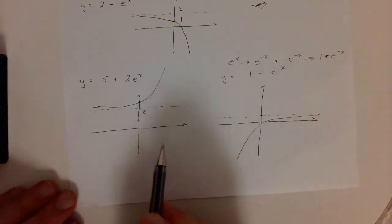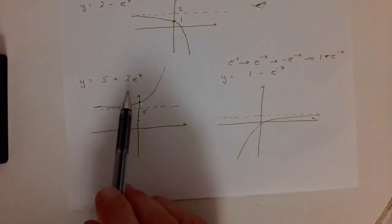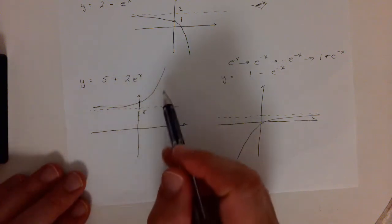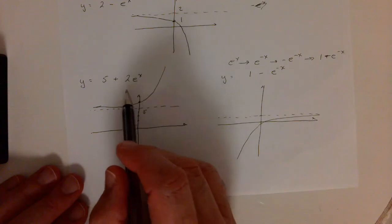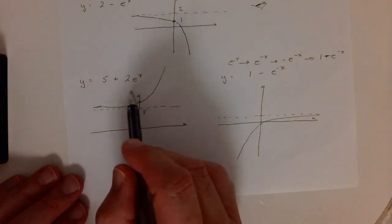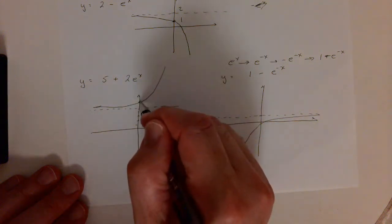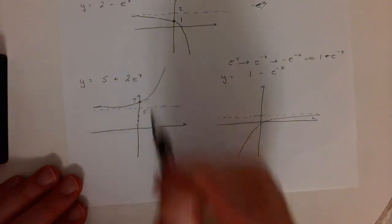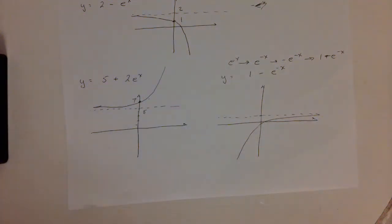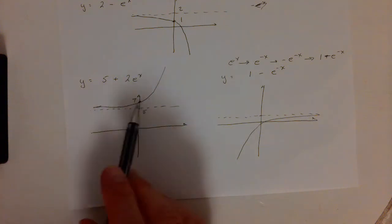5 plus 2 e to the x. If we start with e to the x, multiply it by 2, that's a stretch. And in fact, then if we add 5 to it, we shift everything up 5 units. So, the y-intercept is actually at 7, but that's all we have to do here.